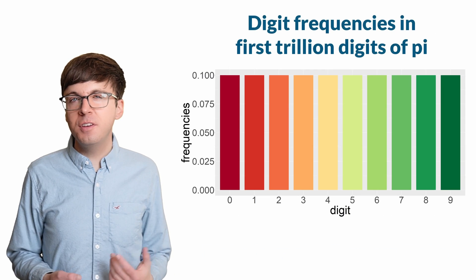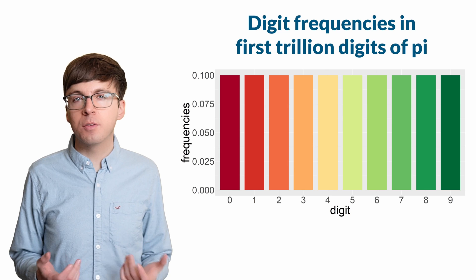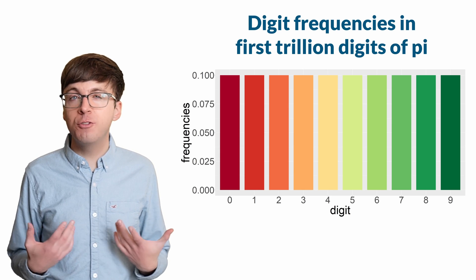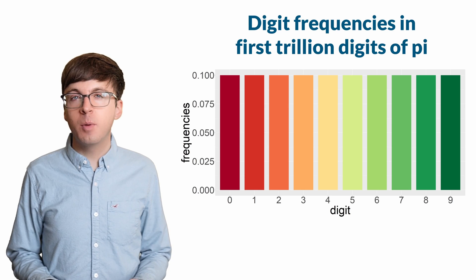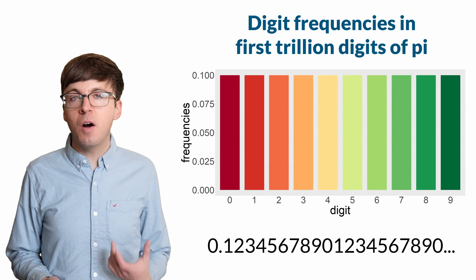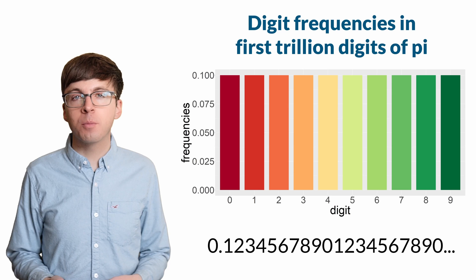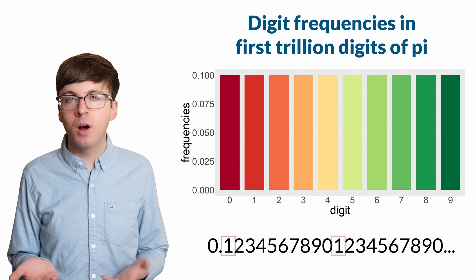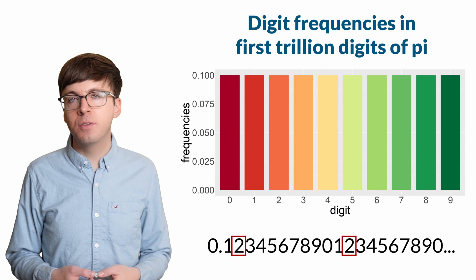Why is that? All the digits from 0 to 9 show up around 10% of the time. In the first trillion digits of pi, the ratios are nearly perfect. But other numbers like this one also have each digit show up 10% of the time. These digits don't appear random because 0 is always followed by 1, and 1 is always followed by 2.